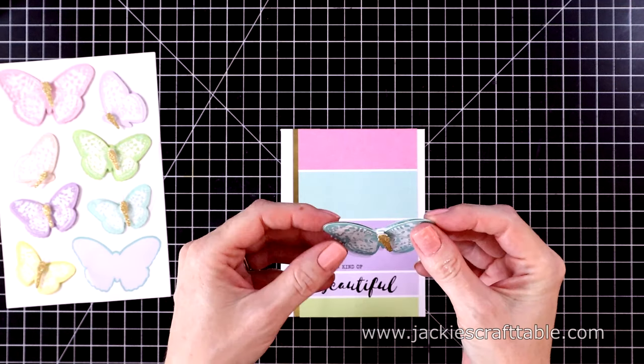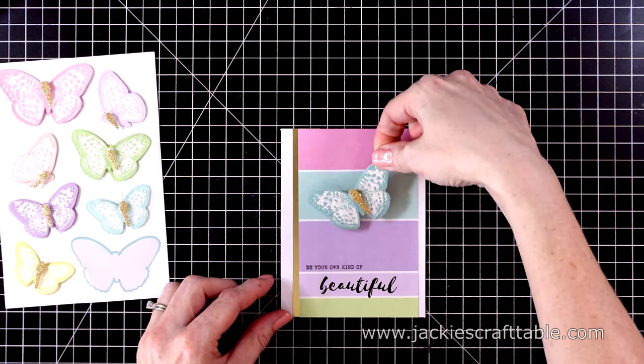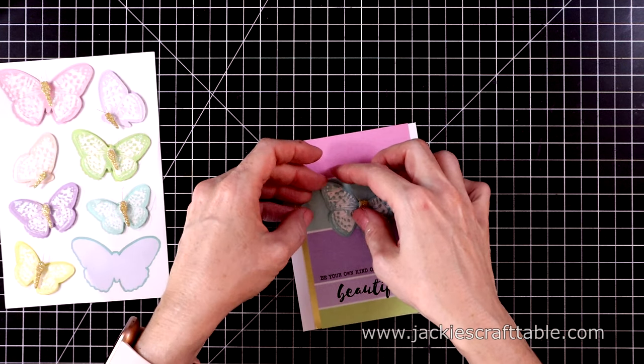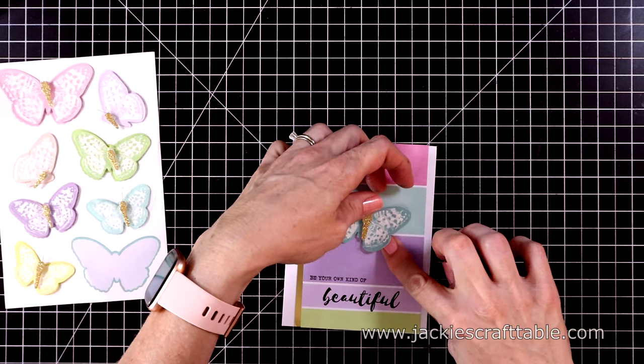It has the sticker, the paper, and then the vellum. Oh, as well as the gold body and the gold antennae. These are just lovely stickers.